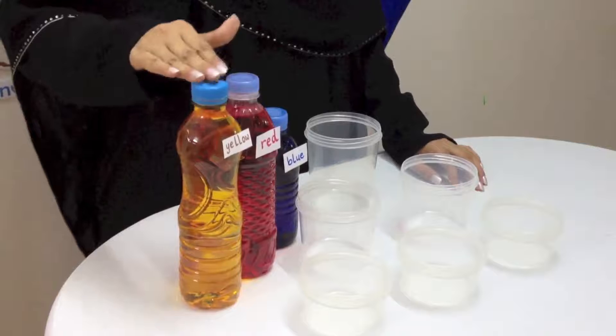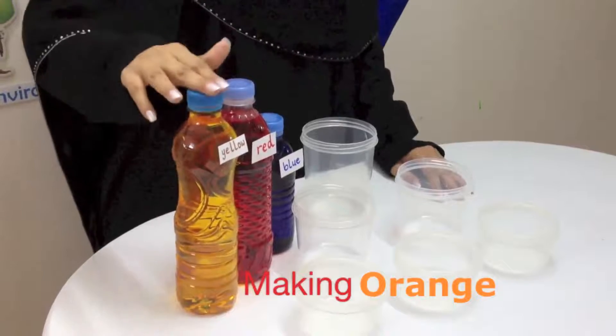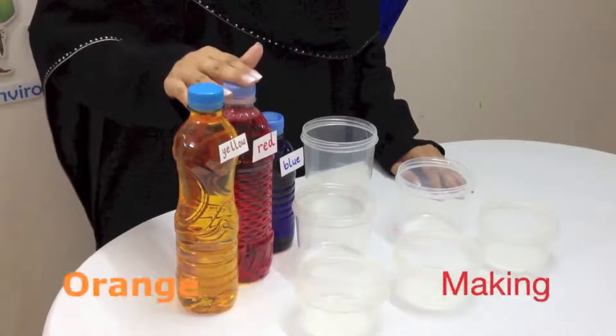Now we are going to do a color mixing activity with the primary colors: yellow, red, and blue. The first color is going to be orange. I'm going to use yellow and red to make orange.